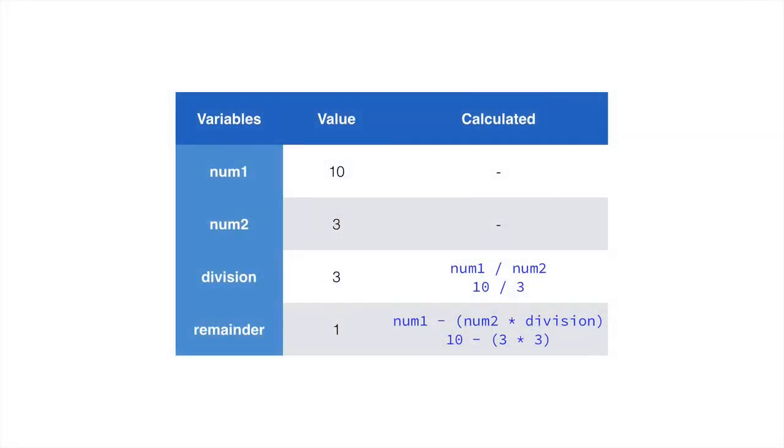So, this is our values. Num1 is 10, num2 is 3. Division is 10 divided by 3. And remainder is 10, take away 3 times 3. So, our remainder of this division is 1.